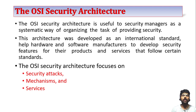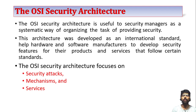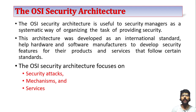Now, the OSI security architecture focuses on three points: security attack, security mechanism, and security service. If you want to use OSI architecture, you first have to learn these three concepts. The first one is called a security attack — any action that compromises the security of information owned by an organization.